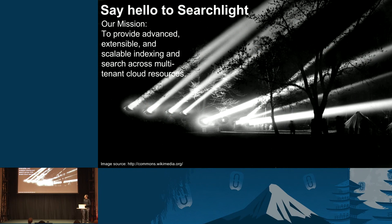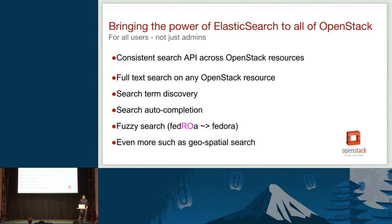That's why we came up with Searchlight. Our mission is to provide advanced, extensible, and scalable indexing and search across your multi-tenant cloud resources. We're bringing the full power of Elasticsearch to all of OpenStack, and it's not just an admin-only service — it's for all users. We're taking RBAC concerns into account, so if you go searching for something you're going to see the things you're allowed to see.